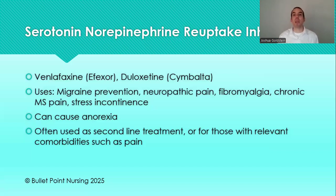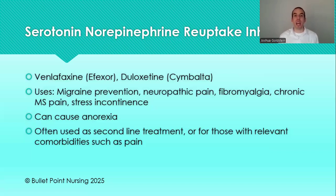SNRIs are used for depression and anxiety, but also off-label for migraine prevention, neuropathic pain such as fibromyalgia, chronic MS pain, and stress incontinence. This medication can also cause anorexia in patients, so if patients are underweight, bulimic, or anorexic, we want to stay away from this drug. It is used as a second-line or further option.